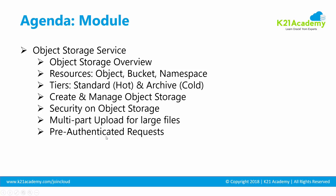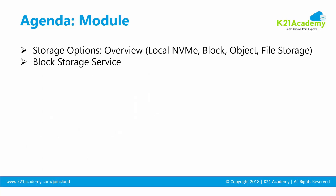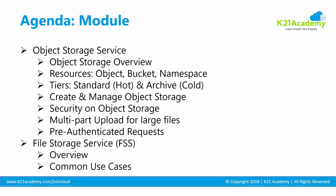Pre-authenticated requests allow you to give someone access to a protected object storage resource without requiring them to have a user ID. That access is granted for a limited time. After covering everything around pre-authenticated requests, we are going to look at file storage service — the third storage type after block and object.